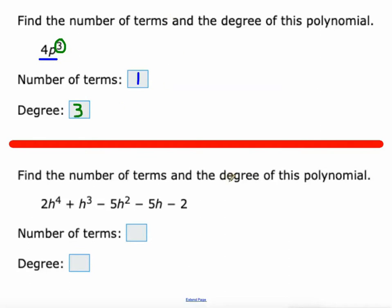All right, the next one, same exact directions: the number of terms and the degree. Okay, so this is different. How many terms? 1, 2h⁴. 2, h³. 3, negative 5h². 4, negative 5h. 5, negative 2. So it's got five terms.